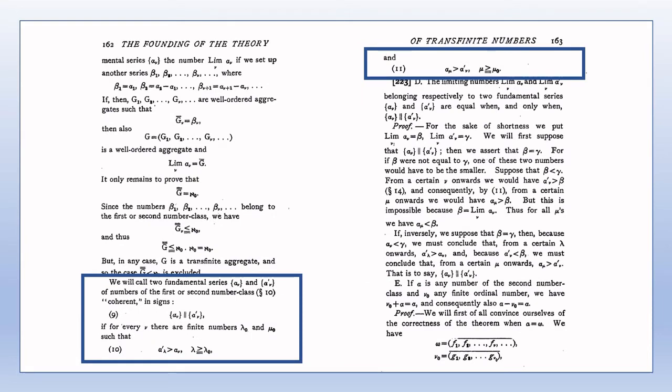The definition of coherent fundamental series of numbers of the first or second number class is not new — it's merely a special case of the already existing notion of coherent ascending fundamental series given in section 10, but in the present section with the less-than symbol replacing the more general simple order symbol used in section 10. We also refer to limiting numbers of fundamental series of ordinal numbers, rather than the more general limiting element.